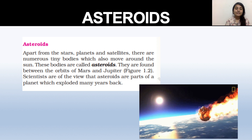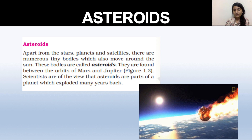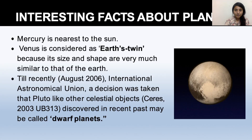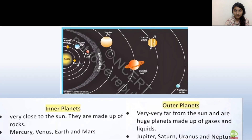Next are asteroids. Apart from stars, planets, and satellites, there are also tiny bodies that revolve around the Sun — we call them asteroids. These bodies are found only between the Mars and Jupiter belt, known as the asteroid belt. You can see in the picture the asteroid belt between Mars and Jupiter.